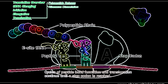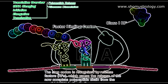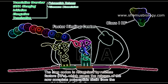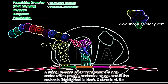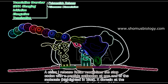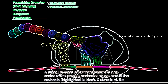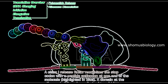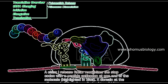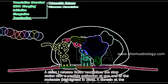Now, termination: this process continues until a stop codon is encountered. A class 1 release factor binds to the factor binding center of the A site — it has an anticodon region that recognizes the stop codon. It also has peptidase activity that cleaves the complete polypeptide chain from the aminoacyl tRNA at the P site, releasing the full-length polypeptide. The class 1 release factor mimics the structure of tRNA.